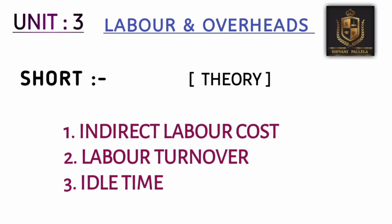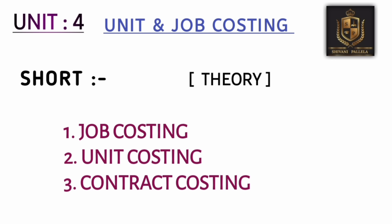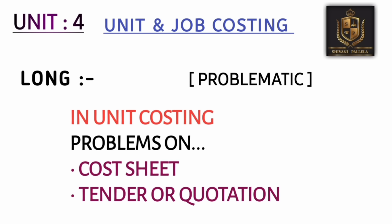For short theory questions in unit three, Idle Time, Labor Turnover, and Indirect Labor Cost are important — I'm giving only three questions each because there are hardly 40 to 50 days for preparation and you need to cover every subject. Coming to unit four, for short answers, Job Costing, Unit Costing, and Contract Costing theory questions can be easily answered if you are perfect with the problematic. I suggest giving preference to problematic chapters — if you know the problems, you can attempt any related theory question.